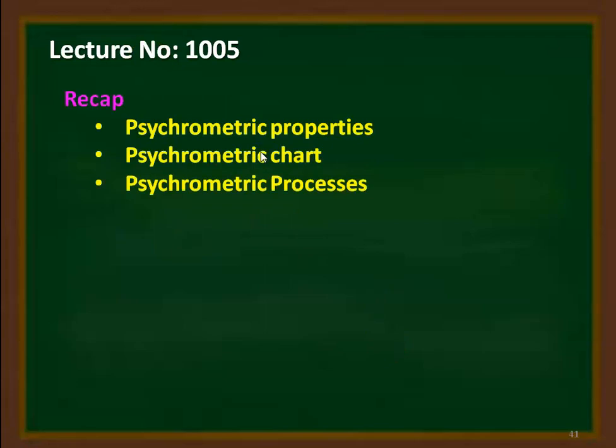We recap from the earlier lecture. In the previous lecture, we studied psychrometric properties like relative humidity, specific humidity, dew point temperature, dry bulb temperature, wet bulb temperature, degree of saturation, and enthalpy of the air and water vapor mixture. We also studied about the psychrometric chart, which is the graphical representation of all the psychrometric properties, from which we can collect information directly.